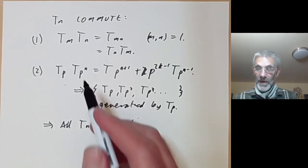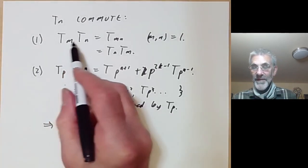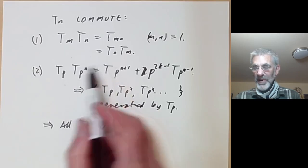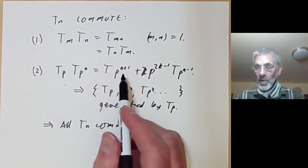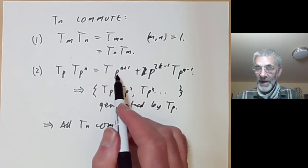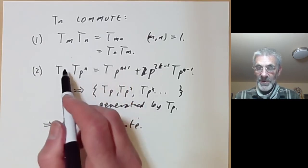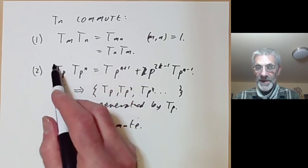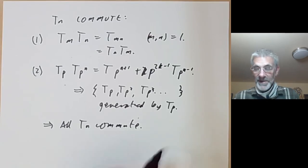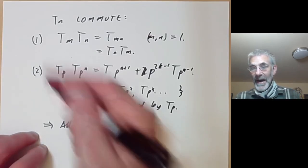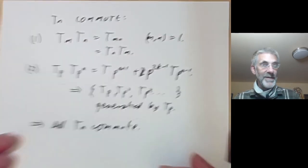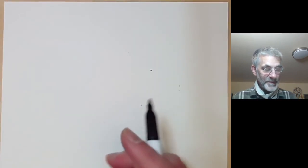Because all the T_p for different primes p commute by the first part, and by the second part we can write all Hecke operators in terms of the algebra generated by the T_p for primes p. So the Hecke algebra of all Hecke operators is indeed abelian.